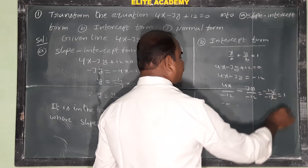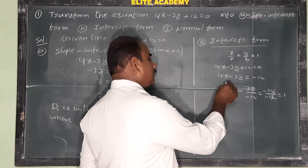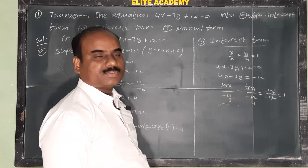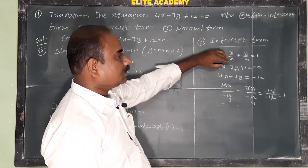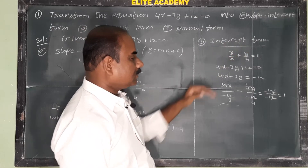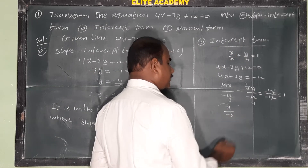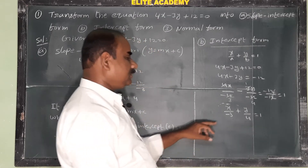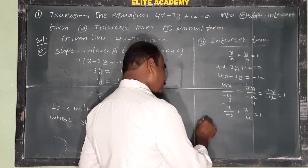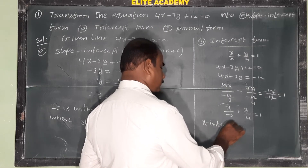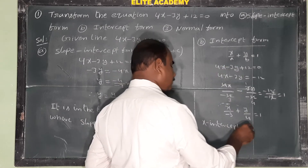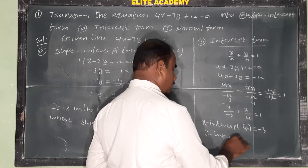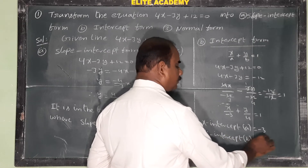After dividing by minus 12: 4x over minus 12 minus 3y over minus 12 equals 1. Simplifying: x over minus 3 plus y over 4 equals 1. This is now in intercept form x/a plus y/b equals 1, where x-intercept a equals minus 3, and y-intercept b equals 4.